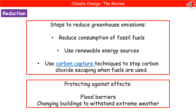Because of these effects, what we're trying to do is come up with some steps to reduce greenhouse emissions. One of the most obvious ones is we can reduce our consumption of fossil fuels — so rather than burning coal, oil, and natural gas, find something else to generate our energy. Those would be things like renewable energy sources such as solar and wind. We can also use carbon capture techniques to stop carbon dioxide escaping when we do burn those fuels. If we can't stop all of these things, we could protect against the effects, but this is just as costly.